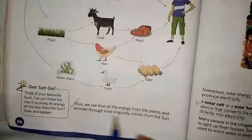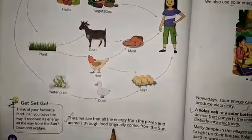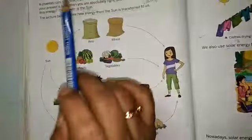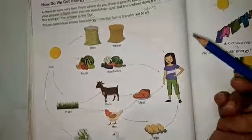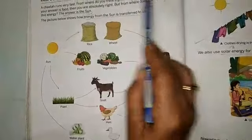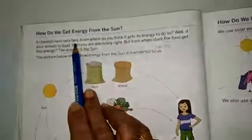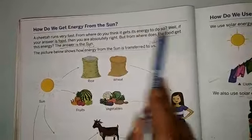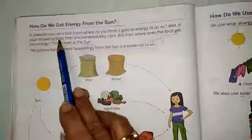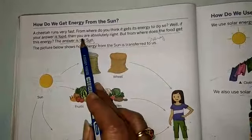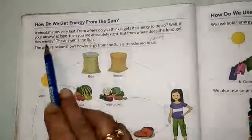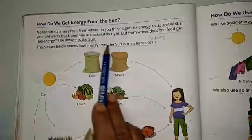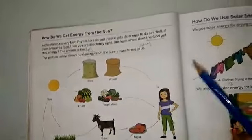Thus we see that energy from plants and animals through food originally comes from the Sun. Look at the diagram and understand: the cheetah runs very fast — from where do you think it gets the energy to do so? The answer is food. But from where does the food get energy? The answer is the Sun. The picture shows how energy from the Sun is transferred to us.